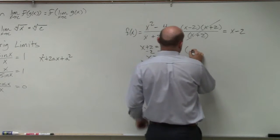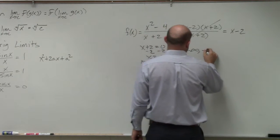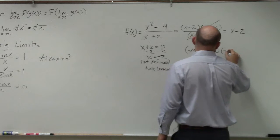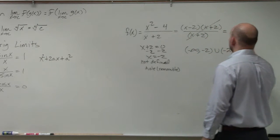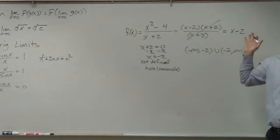So the domain would have been negative infinity to negative 2, union negative 2 to infinity. Even though it got factored out, it's still not a part of the domain.